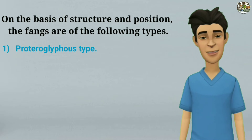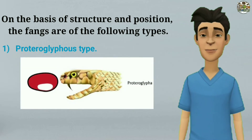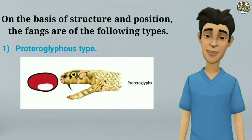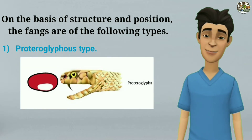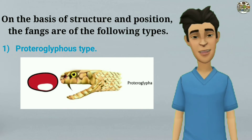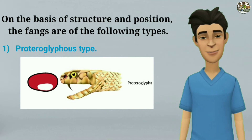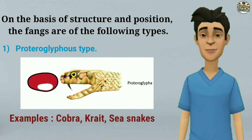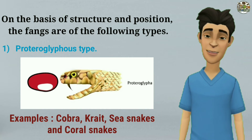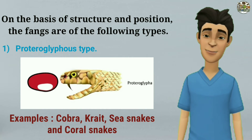Protroglyphs type: the fangs are comparatively small and they are present in front of the maxillae. The fang has a groove all along its anterior face. Examples include cobra, krait, sea snakes, and coral snakes.